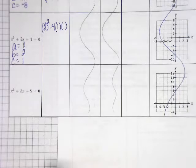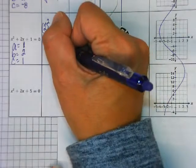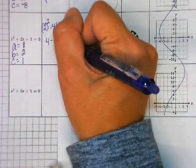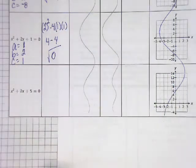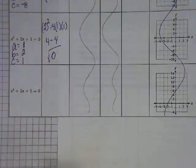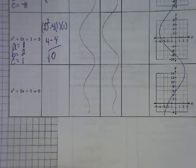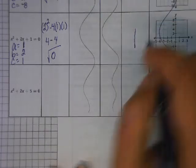Minus 4 times 1 times 1. Well, 2 squared is 4. 4 times 1 times 1 is minus 4. What do I get? Can I take the square root of 0? 0. Last time I checked, 0 times 0 is 0. So it's only one solution.